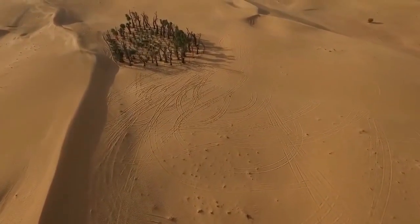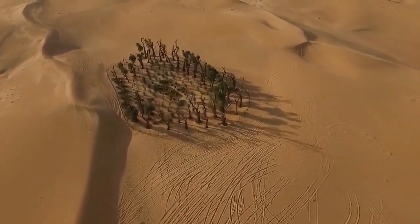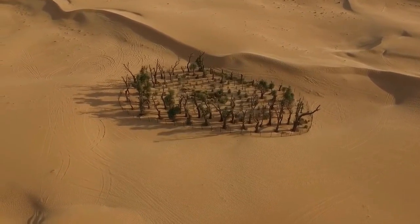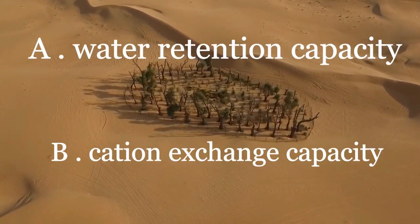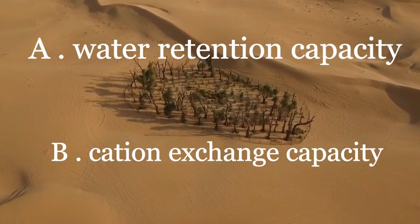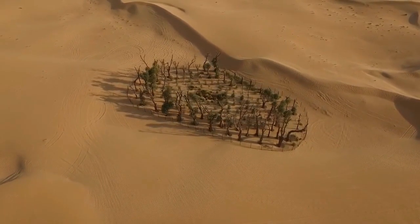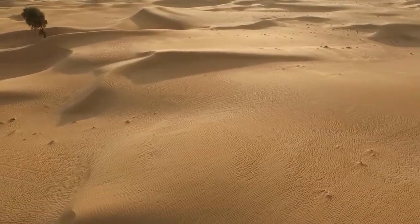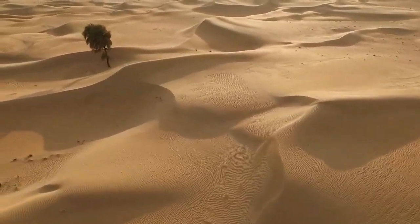To fully understand cation exchange capacity, we must first look at a soil's texture. A soil's texture is determined by the percentage of clay, silt, sand, and organic matter in it. A soil's texture is an important factor because it highly influences: a) its water retention capacity, and b) its cation exchange capacity. Water retention capacity is the soil's ability to retain usable water near the plant roots. And a soil's cation exchange capacity is its ability to hold exchangeable cations in its particles.